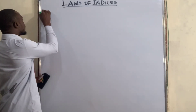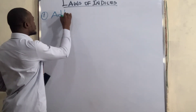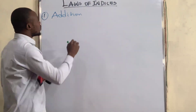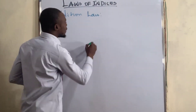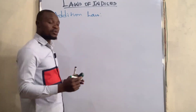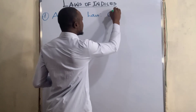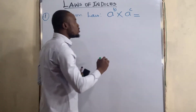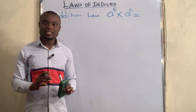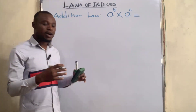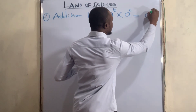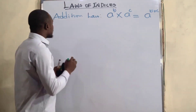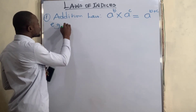The first law is called the addition law. The addition law states that when you have a to the power of b multiplying a to the power of c, since the bases are the same, you just pick one of the bases and add up the powers. So you get a to the power of b plus c.